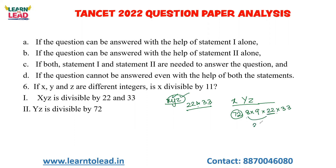From statement 1: x·y·z is divisible by 22 and 33, and 22 is divisible by 11. But if the product is divisible by 11, it could be x, y, or z that carries the factor — we cannot confirm it is x specifically. The data are not sufficient to confirm x is divisible by 11. So option D is your answer.